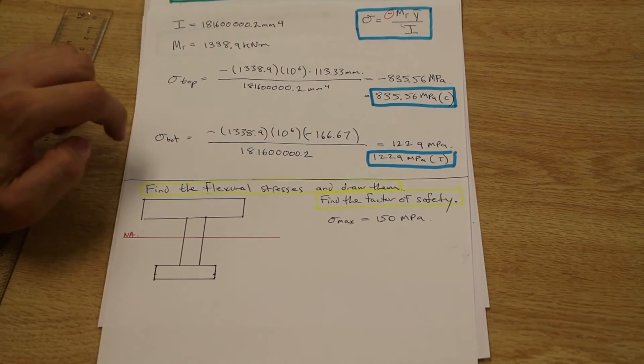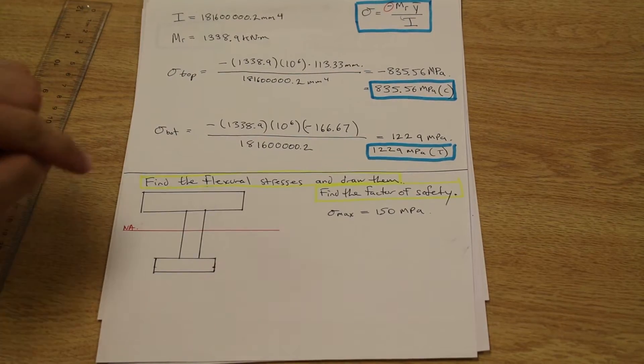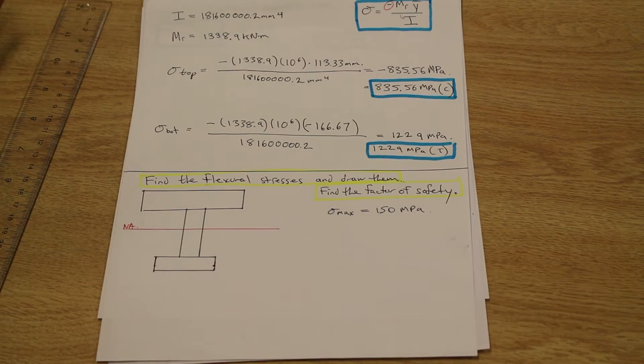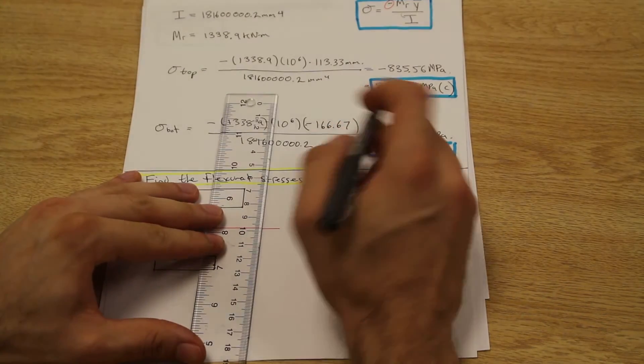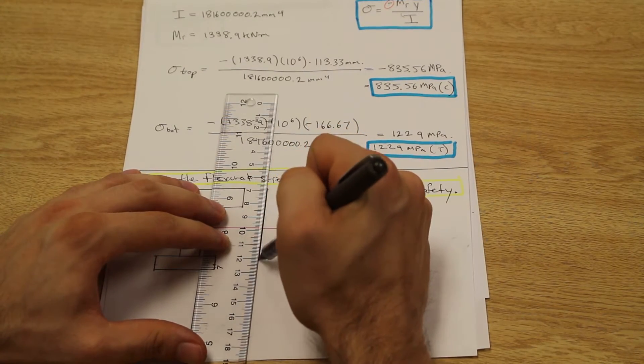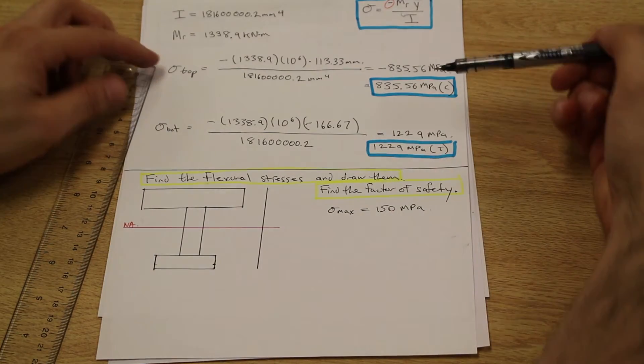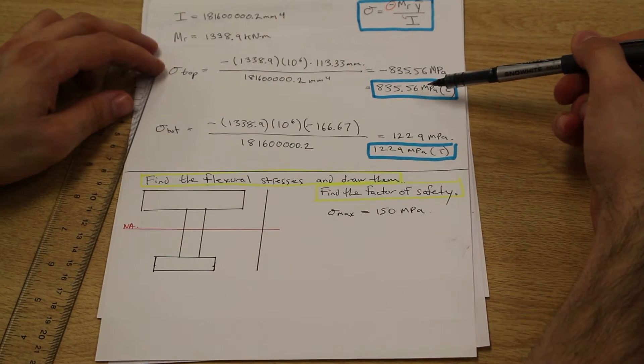What we're going to do is redraw the cross-section. You don't need to dimension it. Maybe your professor wants that. We didn't have to. And what we're going to do is we're just going to draw a straight line here. And we're going to look for our sigma top that we solved for initially.